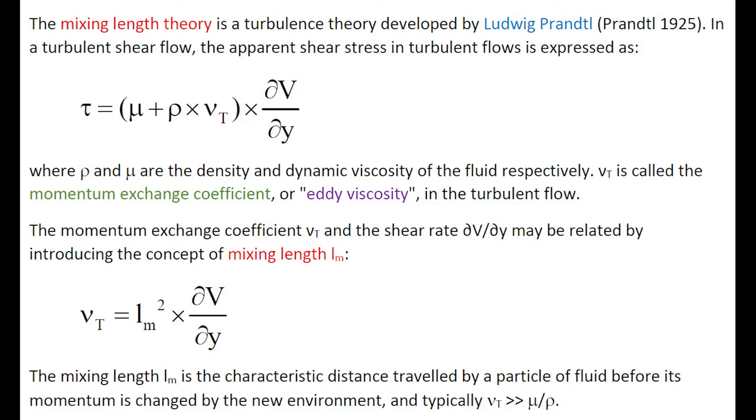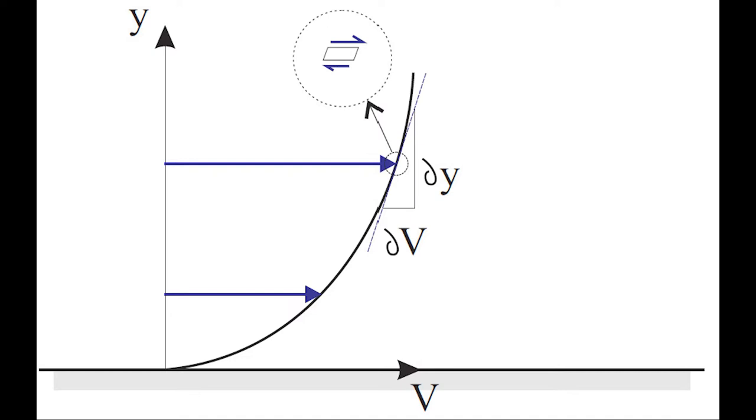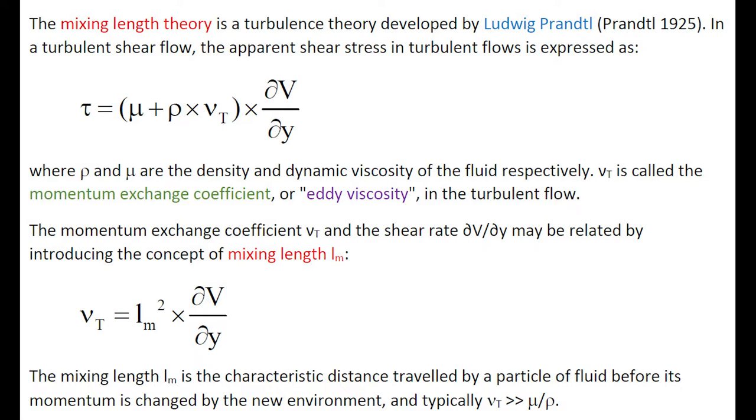The mixing line theory is a turbulent theory developed by Ludwig Prandtl. In a turbulent flow, the apparent shear stress is expressed as the shear stress being proportional to the strain rate, in which eta t is called the momentum exchange coefficient, or eddy viscosity.